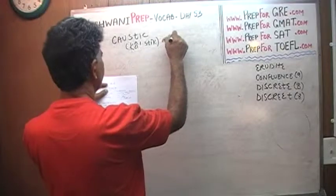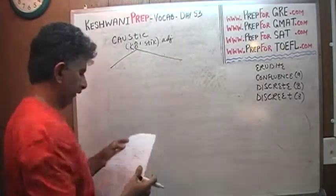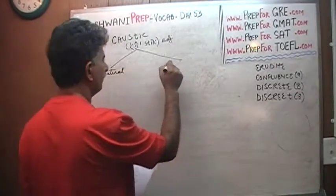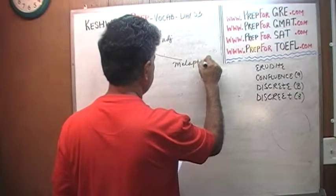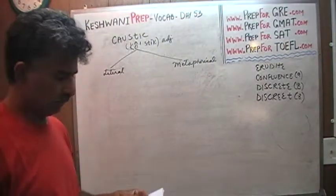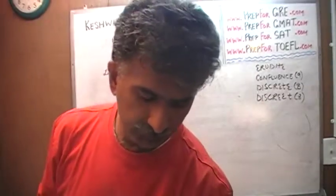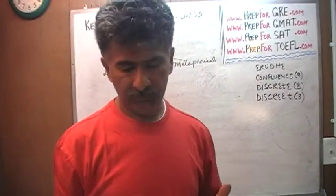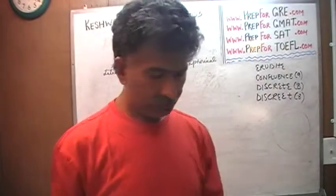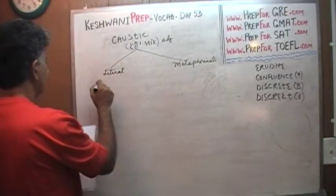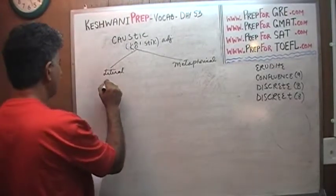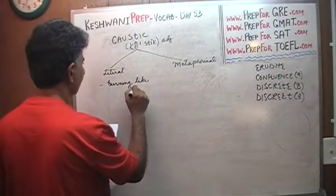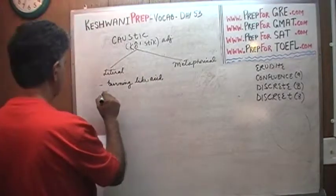Caustic is an adjective. It actually has two meanings: a literal meaning and a metaphorical meaning. Some words do that — they mean one thing in a literal sense, and then they mean something else metaphorically speaking. Literally, caustic means something that is burning like acid, something that is corroding.